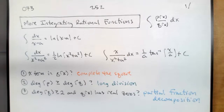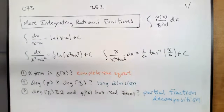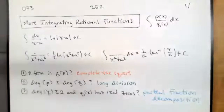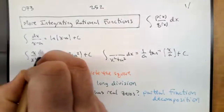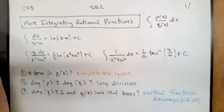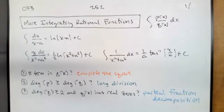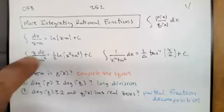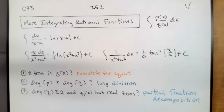We're going to continue integrating rational functions. We wrote down our three base integrals. I just realized I normally write these with constant over linear, then constant over x squared plus a squared, then x over x squared. I decided yesterday to switch the order up, and apparently the new habit hasn't taken yet. So I had those backwards at the beginning.